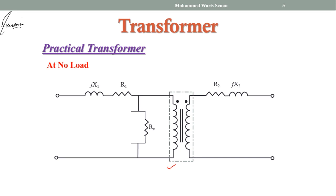The last parameter to represent is magnetizing reactance Xφ, which represents the magnetizing flux of the core. Since the magnetizing flux is proportional to the induced EMF E1 (from the EMF equation E = √2·π·N·f·φm, so φm ∝ E), we show the magnetizing reactance Xφ in parallel with RC, both across the induced EMF E1. So the parameters of the practical transformer are X1, R1, Xφ, RC, R2, and X2.